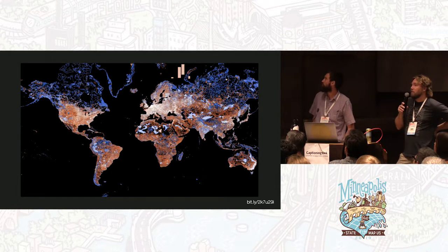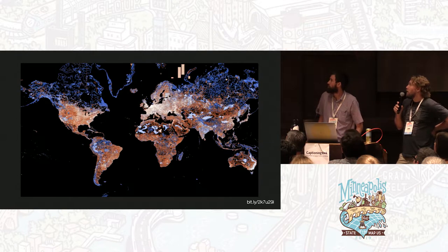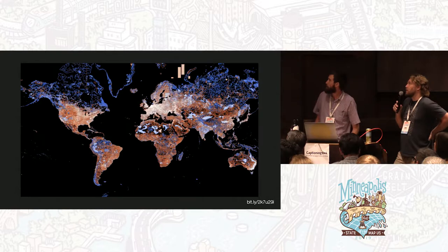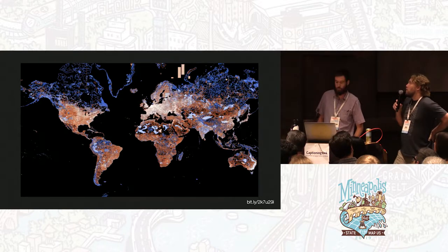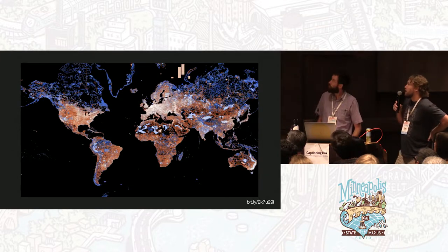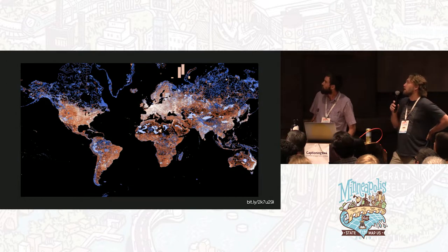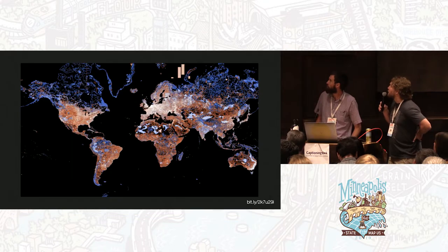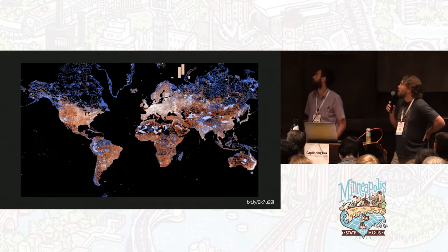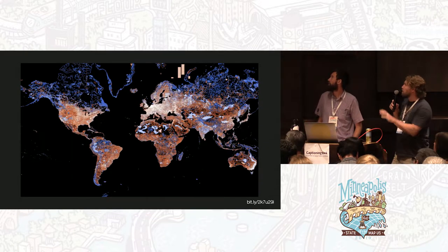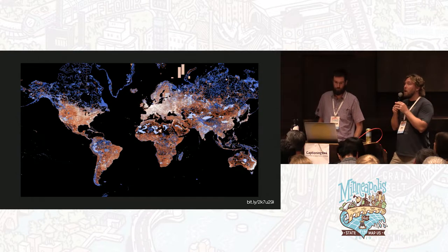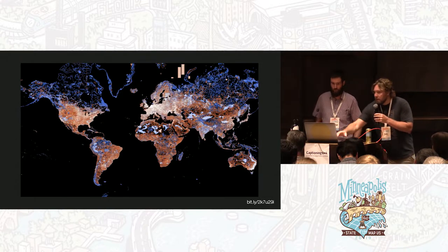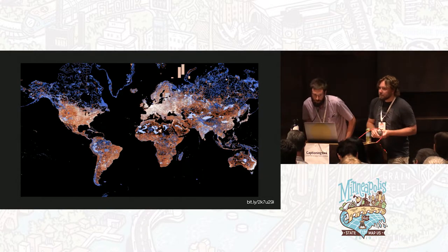It gets a little bit more interesting when you start to break it up according to what's actually in there. This is a map of manmade features versus natural features. What Jennings did here is he took anything that is tagged with 'natural equals anything' and colored that blue, and then everything else shows up in the other color. So you can find out where the natural features are versus the manmade stuff.